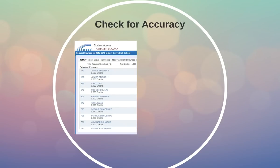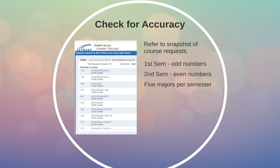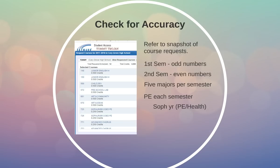As you review these, you need to check for accuracy. It might be helpful to refer to the snapshot you took of your course request form when you met with your counselor earlier this school year. Please remember that first semester courses are odd numbers and second semester courses are even numbers. Make sure that you are signed up for five majors per semester — that's any course worth half a credit per semester. Also make sure that you have PE each semester, unless this is going to be your sophomore year, where you get one semester of PE and one semester of health. Also make sure that lunch is added, choir or band if you requested them. Note that no study halls or commons have been added at this time.